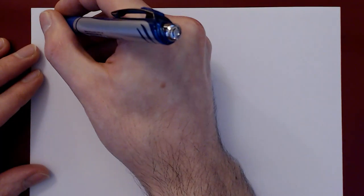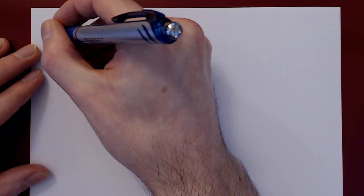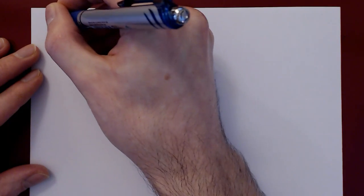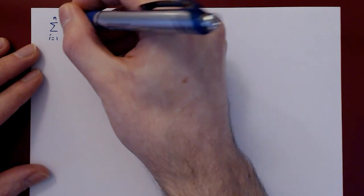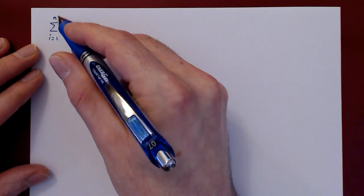Okay, so in this video we will find a summation formula for the following fundamental sum: the sum of i as i ranges from 1 to n.